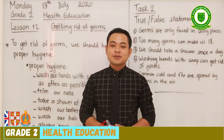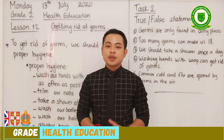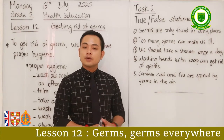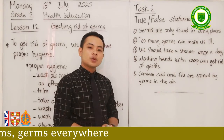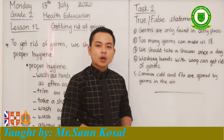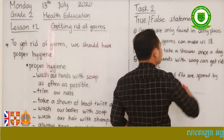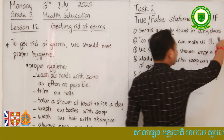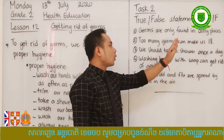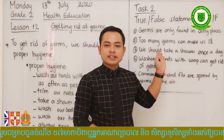Hello again, my beloved Grade 2 students. Welcome to our second episode. Thank you for submitting Task 1 — you have done a brilliant job. Right now we are going to do Task 2 together. Task 2 is about true and false statements. If a sentence is true, write the letter T. If a sentence is false, write the letter F. Copy the sentences into your notebook.